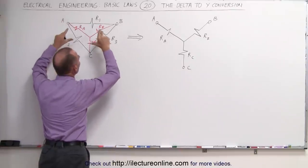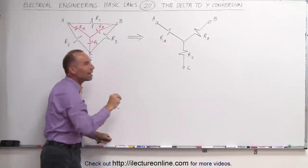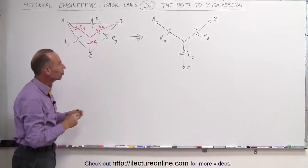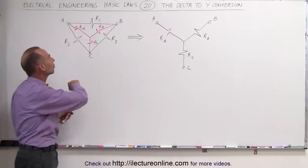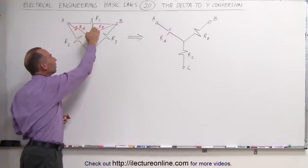Notice we have the very same connections. This Y connection will be connected to the very same nodes as the original circuit. But now we need to make a translation between R1, R2, and R3 to RA, RB, and RC.